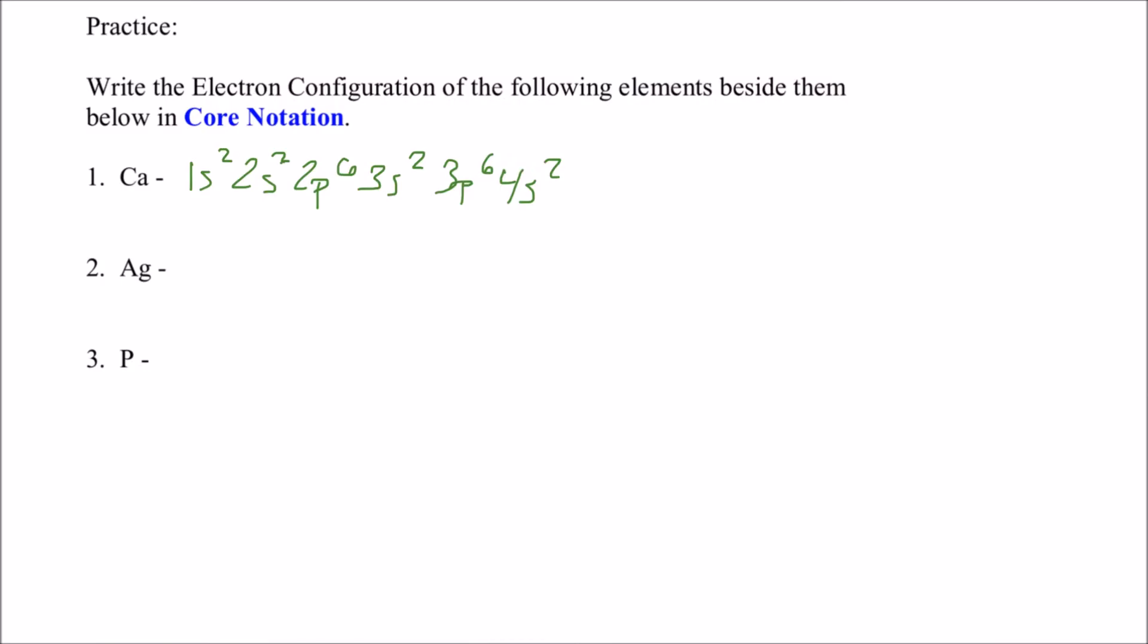What we're going to do is put argon in brackets, and then we complete the rest of the configuration, which was the 4s2. So that means that this is the core notation for calcium. See how much simpler that is?